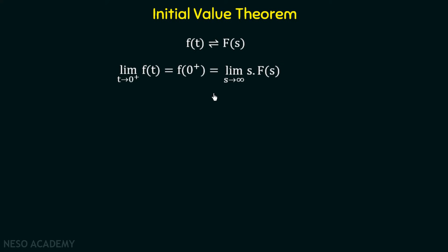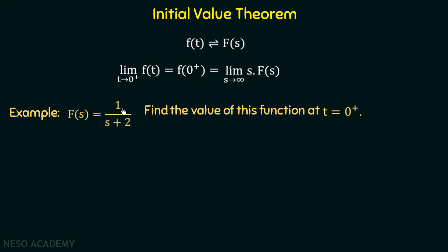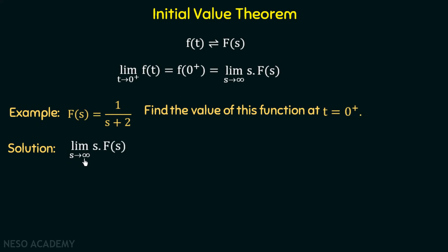We will understand this theorem with an example. Suppose F(s) equal to 1 over s plus 2; find the value of this function at t equal to 0 plus. This is the same function discussed earlier. We will find its initial value using the initial value theorem. The initial value in the s domain is limit s tending to infinity of s times F(s).